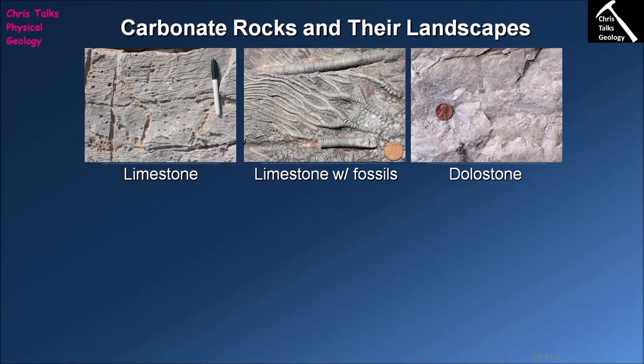By now we know that the majority of carbonate rocks are the result of organic processes — more accurately, the build-up of shelly material associated with life. This can obviously be pieces of coral or the shells of bivalves, like oysters. There's also a whole range of other animals that have calcium carbonate shells and skeletons, and essentially all you need is an environment with enough of these organisms to build up a substantial layer of carbonate.